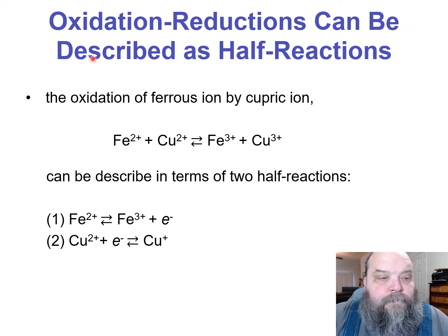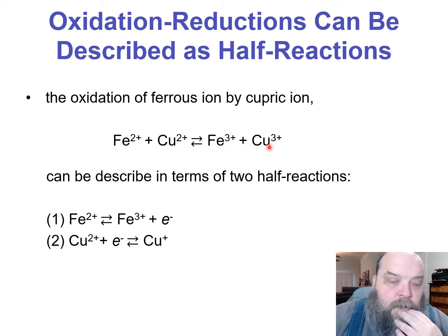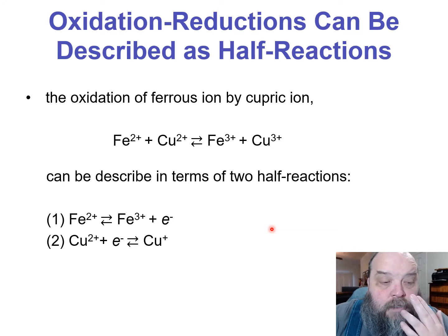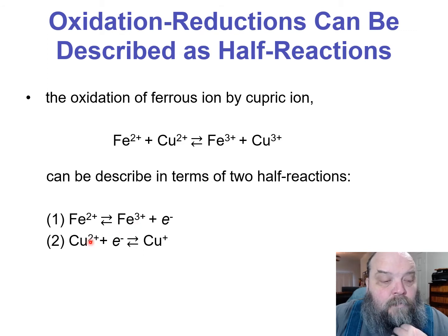When we look at oxidation-reduction reactions — these redox reactions — a lot of times we'll go through and look at the half reactions. Overall, iron plus copper gives us Fe²⁺ and Cu²⁺ yielding Fe³⁺ plus Cu³⁺. We're going from Fe²⁺ to Fe³⁺ and giving up an electron, because now it's going from 2 to 3-plus. Cu²⁺ accepts that electron and now it's only missing one electron as opposed to two.